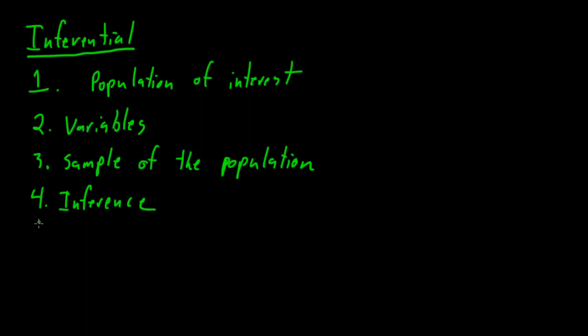And number five for our inferential statistics problem is the measure of reliability — how well do we think our inference is going to stack up against what we actually observe. That measure of reliability is perhaps some error range, plus or minus some given percentage, along with a stated confidence level for our inference.